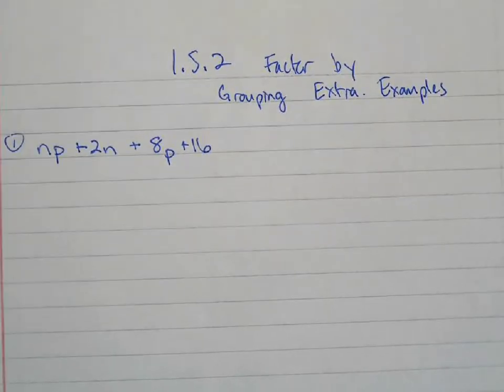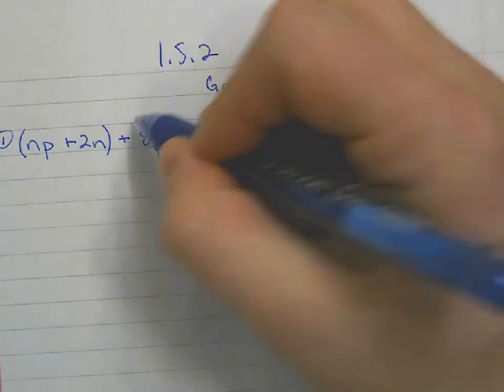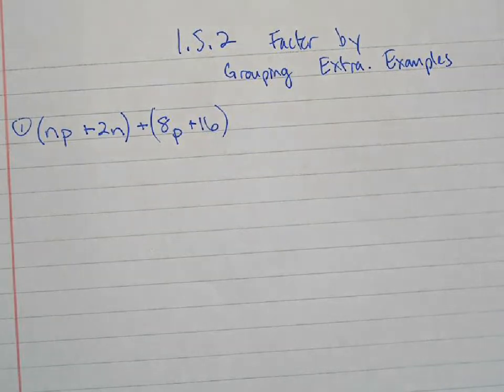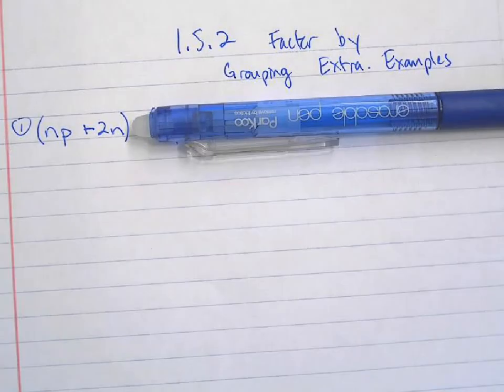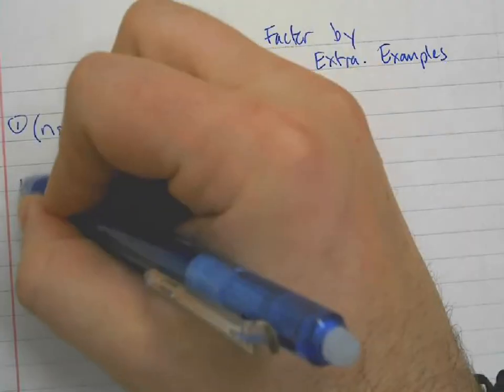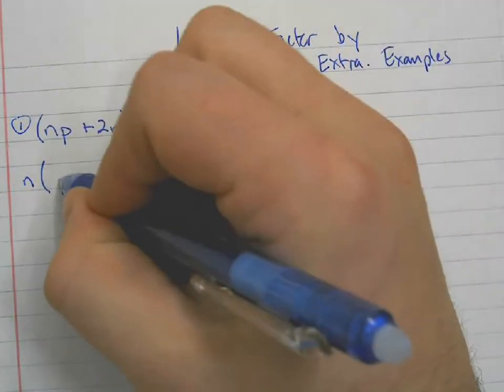So here's our first example: NP + 2N + 8P + 16. The whole idea behind factor by grouping is I'm going to create these groups. So I group my first two terms together, and then I'll group my second two terms together. Now I treat each group as a greatest common factor idea. If I just look at my first group, ignoring the second group, what can I factor out of both of these terms? I can factor an N out. And if I factor an N out, what's left behind? P + 2.